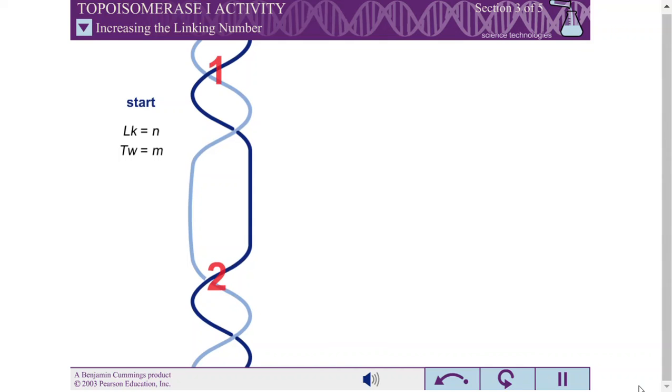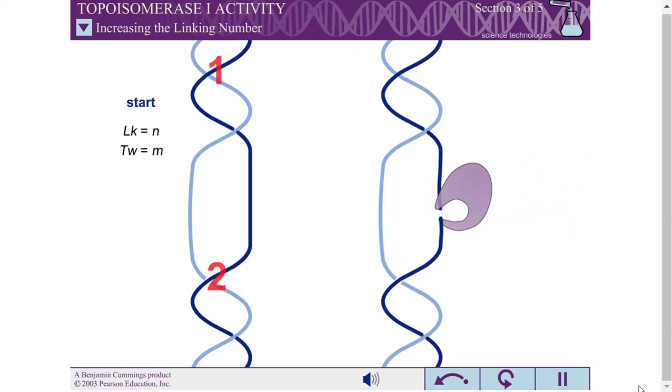Overall, the reactions catalyzed by the type I topoisomerase have added one twist to the DNA, increasing the linking number by one.